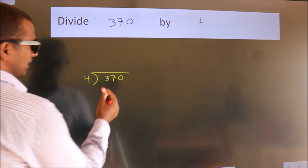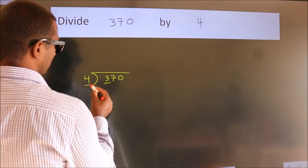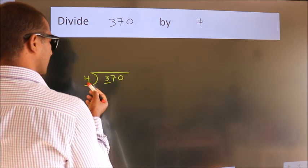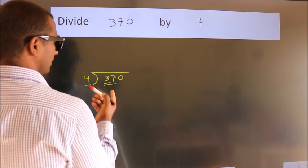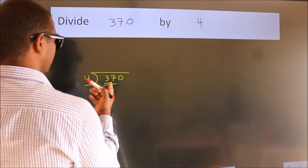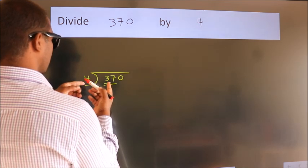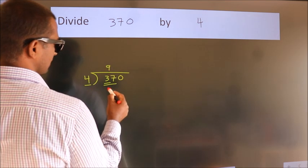Next, here we have 3. Here 4. 3 is smaller than 4, so we should take 2 numbers, 37. A number close to 37 in the 4 table is 4 times 9 equals 36.